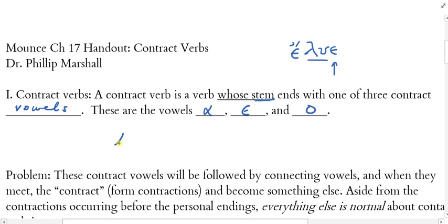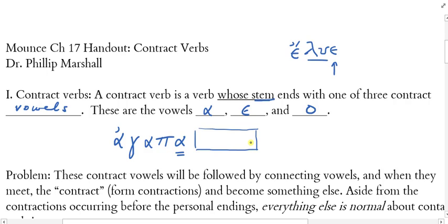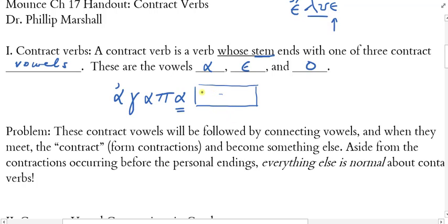So contract verbs end with alpha, epsilon, or omicron in their stem. The most commonly used contract verb we'll be talking about as we illustrate contract verbs in the chapters going forward — because we're going to meet contract verbs in all the tenses — is one like *agapa*. That is the stem of the verb *agapaō*, 'to love.' The stem ends with an alpha, and then we're going to add things to that stem to create the rest of the verb form.